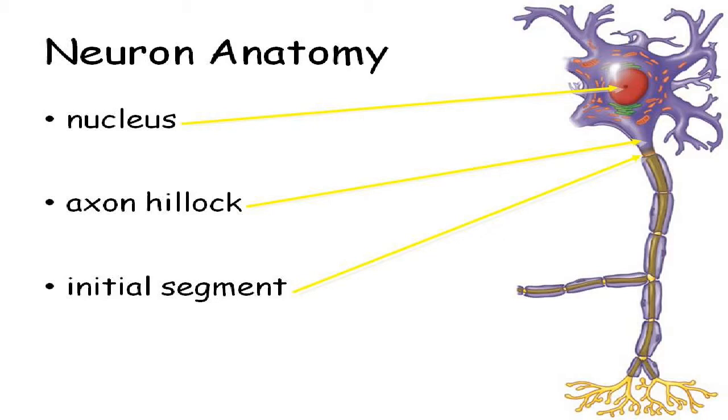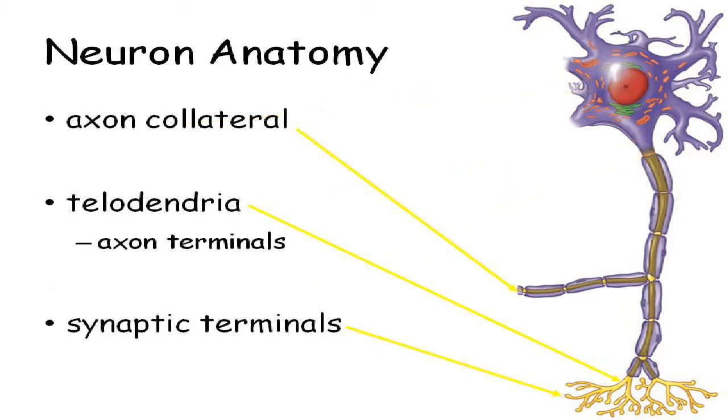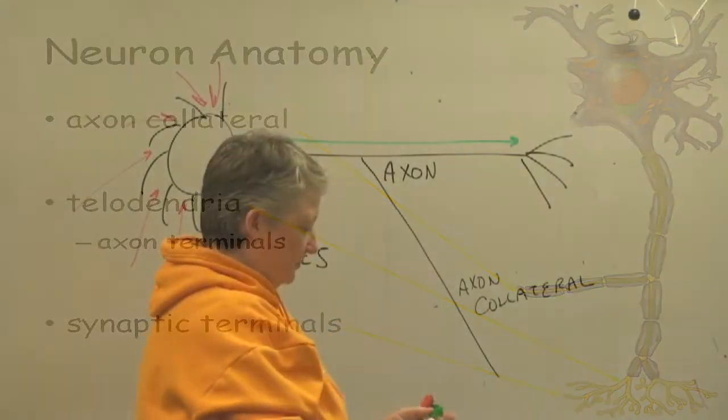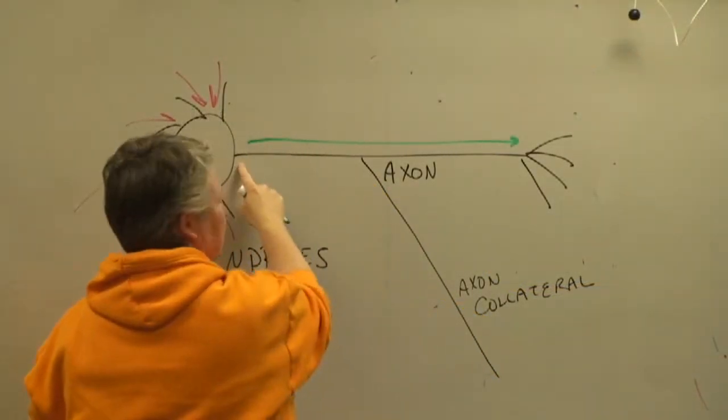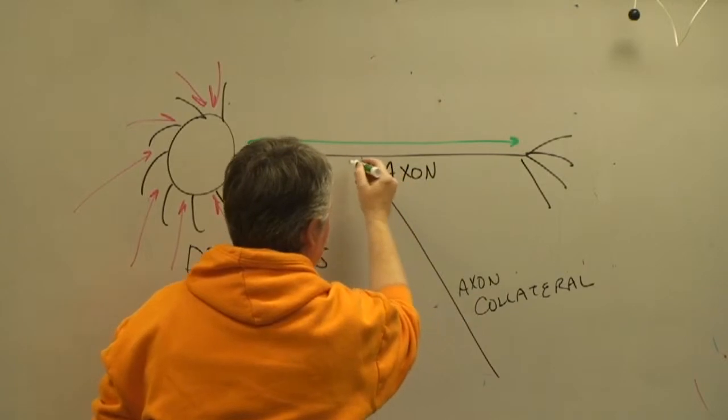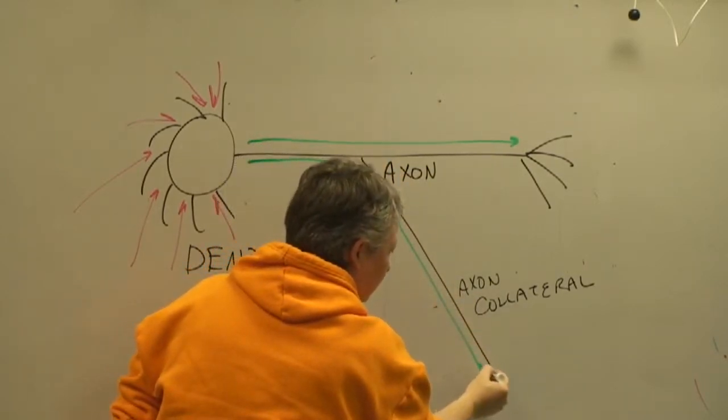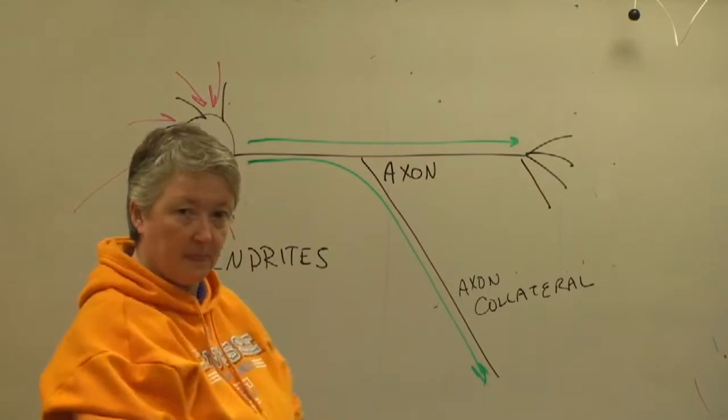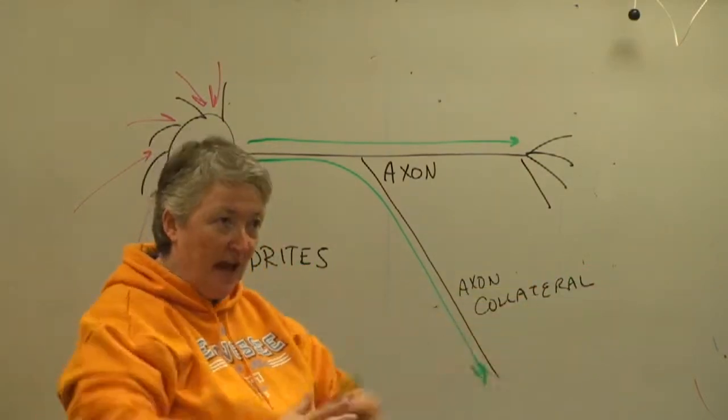These axons can have branches called axon collaterals. Or I think your textbook calls them collateral branches. Axon collateral is how I learned it, so that's probably what I would say. But the important point to realize about these is once a signal starts here at this initial segment, the beginning of the axon, it's going to travel down all the axons and all the axon collaterals. So it has a bunch of branches, a bunch of output branches, exactly.